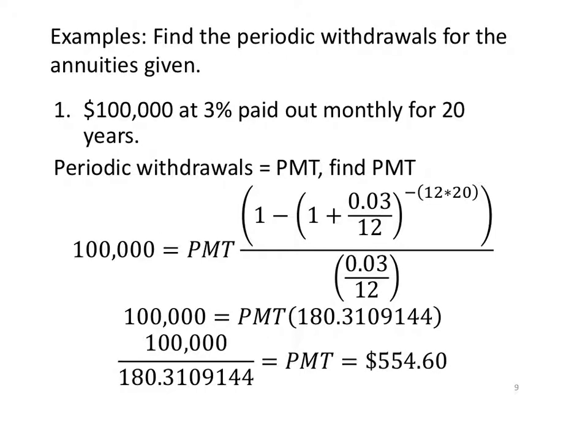Let's find the periodic withdrawals for the annuities given. Find the periodic withdrawals, $100,000 at 3%, paid out monthly for 20 years. Periodic withdrawals, I want to find the PMT. So I know I have currently $100,000 maybe in lottery winnings, and I want to find how much I'm going to make each month. Enter my values, 1 minus parentheses, 1 plus i, 0.03 over monthly, close the parentheses to the power of negative because this is an ordinary annuity.